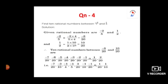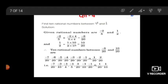We will move on to the next problem: find 10 rational numbers between minus 2 by 5 and 1 by 2. Before moving on to this problem, let us discuss an important concept — between 2 given rational numbers, there are infinite rational numbers. That is, you can find n number of numbers between 2 given rational numbers. Here, the given 2 rational numbers are minus 2 by 5 and 1 by 2.